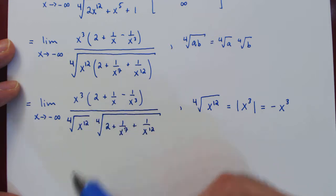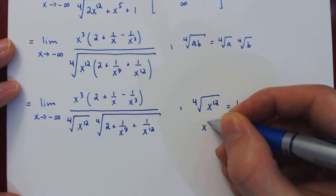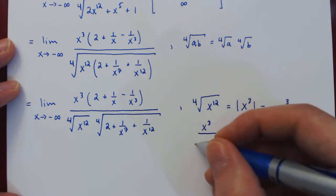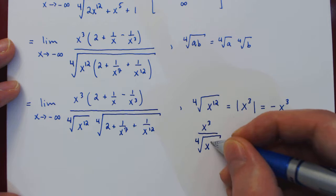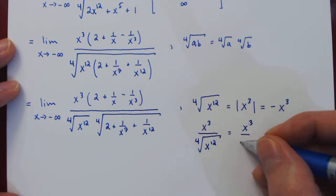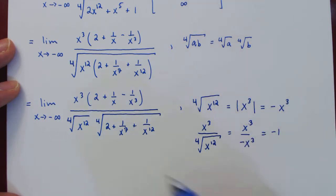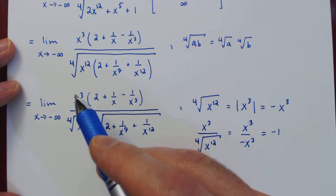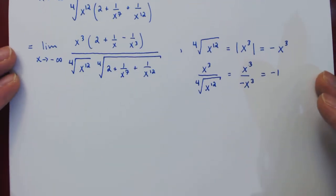So if we simplify these two together, x³ over the fourth root of x¹² is x³ over negative x³, which simplifies to negative 1. And we can leave a negative 1 on top or bottom. We'll put it on the numerator, not that it matters.